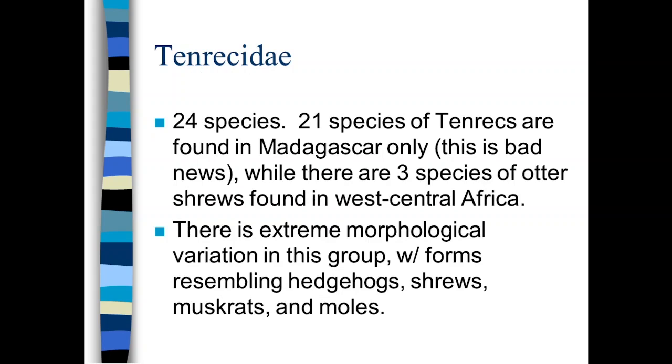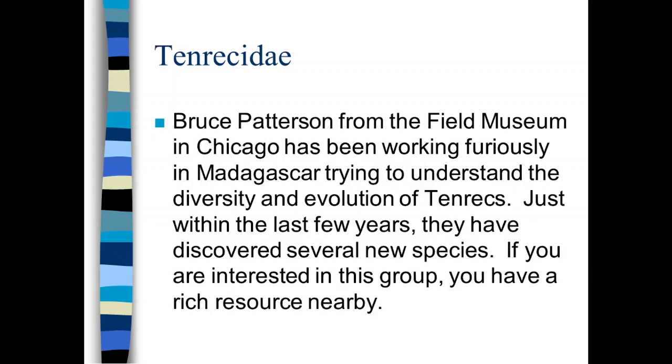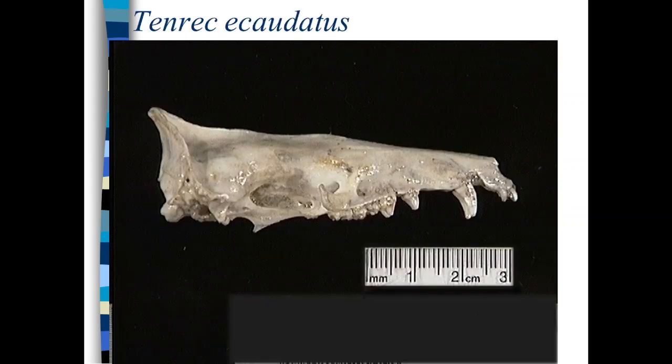Tenrecs. We talked at some length about the tenrecs. These guys are restricted to Madagascar, which is unfortunate because obviously the amount of environmental degradation in Madagascar is extreme. It's not the fault of the people that live there. They are in extreme poverty and they are doing subsistence agriculture. And that means a lot of slash and burn agriculture. But the important thing for us when it comes to the tenrecs is the amount of morphological diversity that you see in that group resembles almost everything that we're looking at today. So they have forms, everything from hedgehogs to moles, shrews and muskrats. So there's an extreme amount of morphological diversity in the group. And there you can see a skull of a tenrec. Notice again that the absence of the jugal.